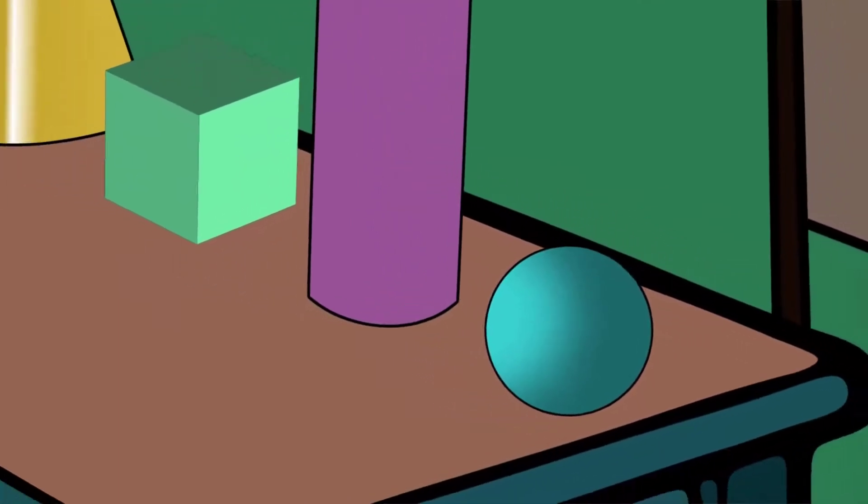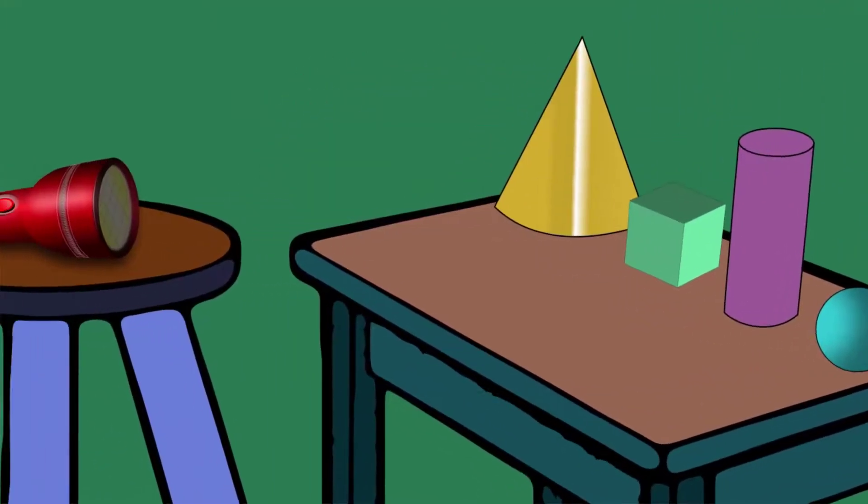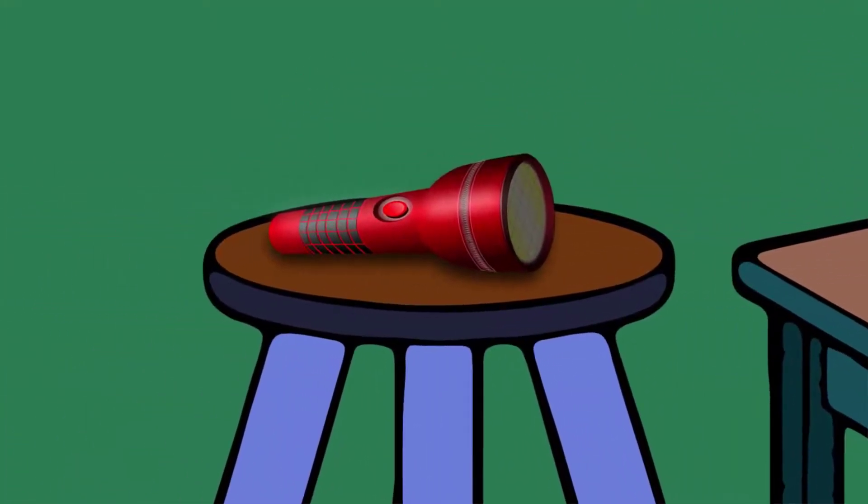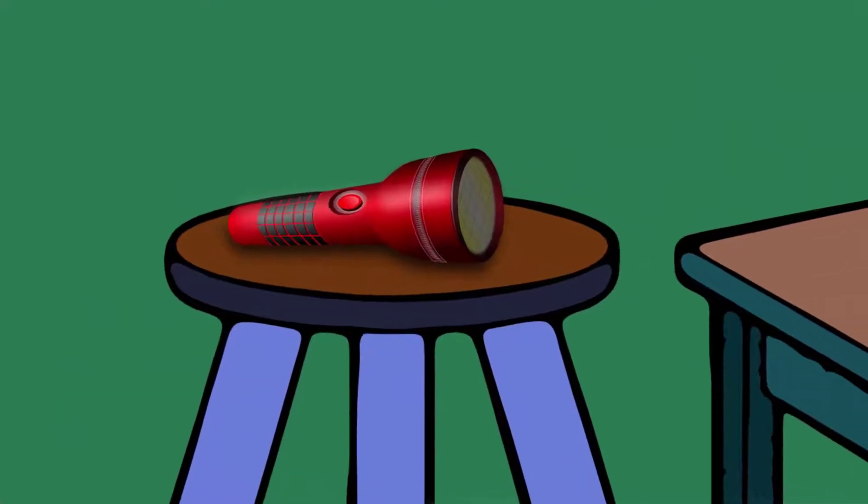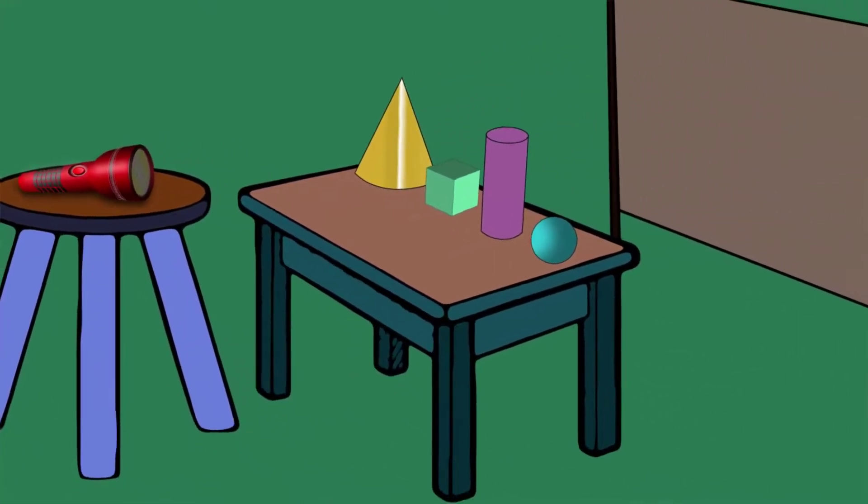Three dimension shapes of cone, cube, cylinder and a sphere are kept on the table. Look at there. A torch light is kept on a chair. Let us see what will happen if we switch on the torch light.